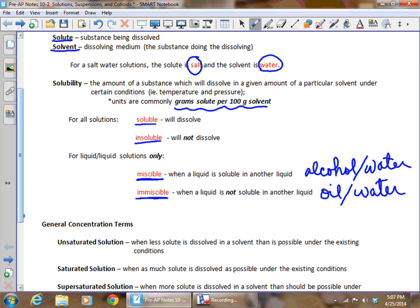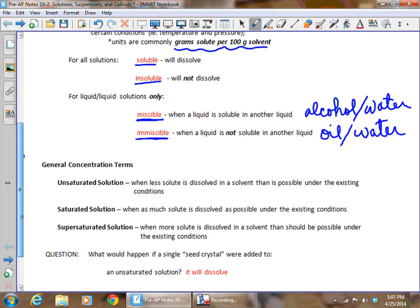We have some general concentration terms. If something is unsaturated, it means there's less solute dissolved in the solvent than is possible under the existing conditions, so you could get more to dissolve. If it's saturated, it is full, it has absolutely all of the solid dissolved in it that it possibly could under those conditions.